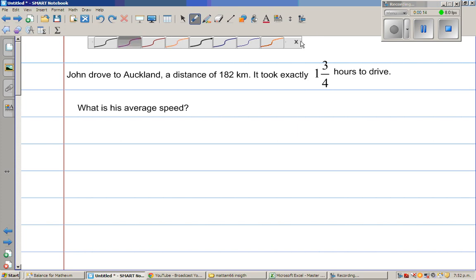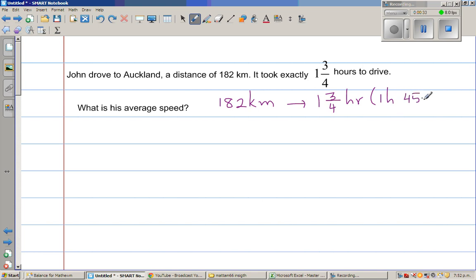So here the question is, for John to travel 182 kilometers it took one and three quarter of an hour. If you write this in hours and minutes, this is one hour, 45 minutes. Three quarter of an hour, one quarter is 15 minutes.